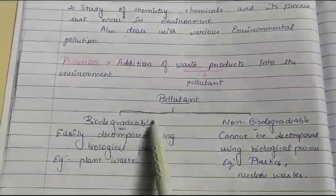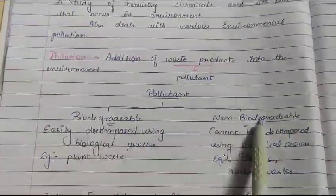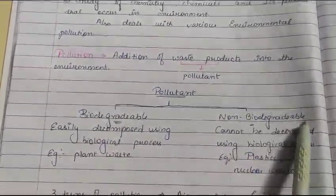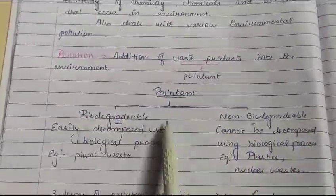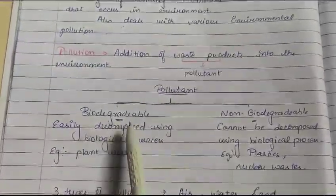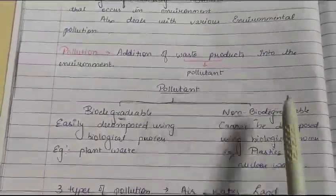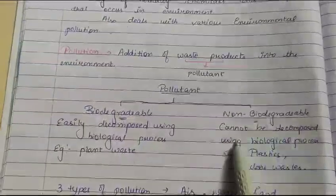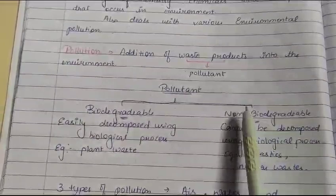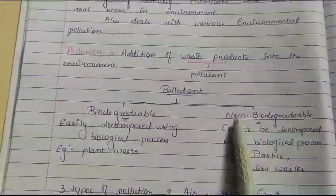Pollutants are of two types: biodegradable and non-biodegradable. Biodegradable pollutants are those that can be easily decomposed using biological processes — nature can easily decompose them. Non-biodegradable pollutants cannot be decomposed using biological processes and are not easy to decompose.